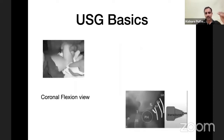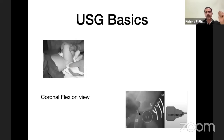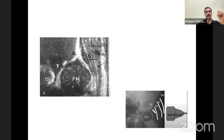Regarding ultrasound: we perform a coronal flexion view and get an AP-equivalent image. Since the femoral head won't be visible on X-ray in infants, we do ultrasound. You can see the triradiate cartilage as a gap, the iliac crest, and the gluteal muscles. Then there is the ischium, and once you remember these landmarks, reading the ultrasound becomes easier.